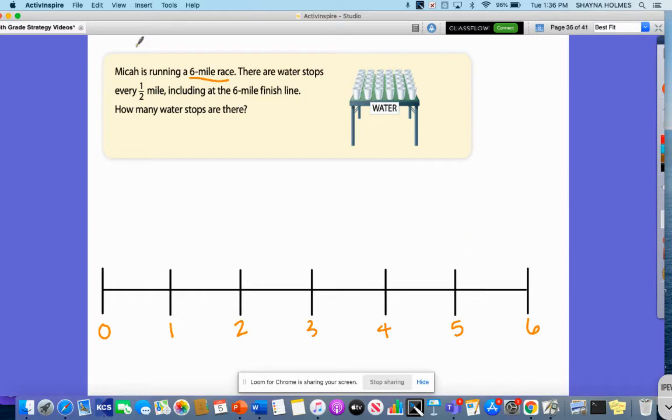Okay, so now it says that there are water stops at every half mile, including at the six-mile finish line. So how many water stops are there? Well, how many halves are in just one? Well, there are two. So that's going to help us find out how many there are in six.